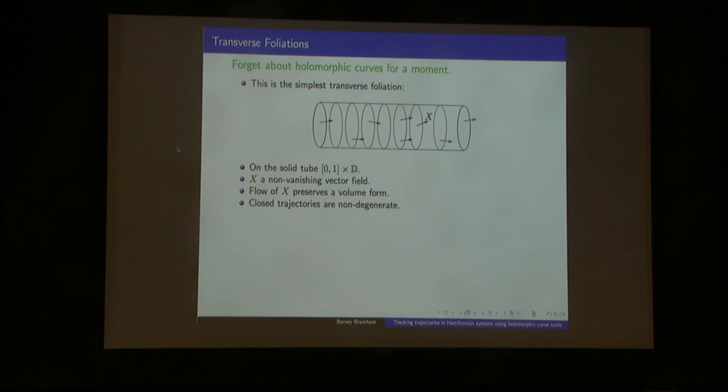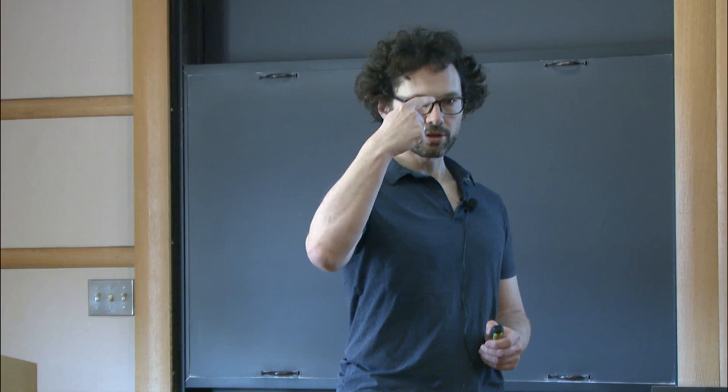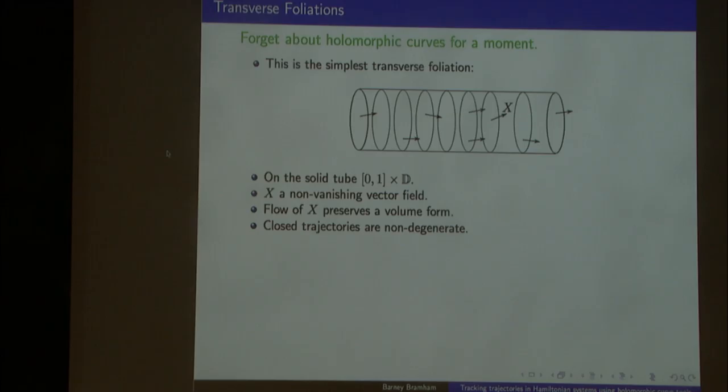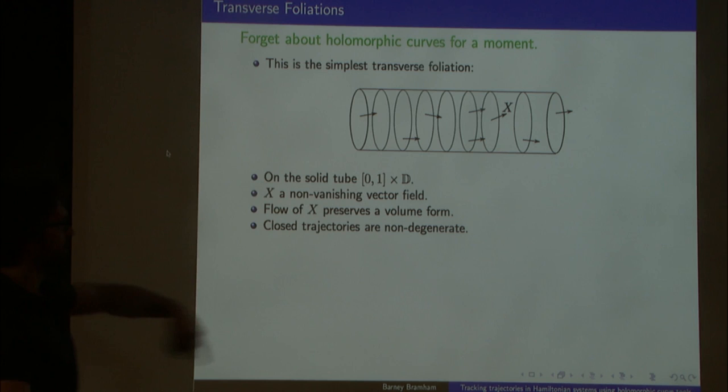I will assume most of the time, and certainly for the end result, that the closed periodic orbits of this vector field are non-degenerate. Since we're working in a conservative setting, this does not mean the eigenvalues of the linearized return map are not on the unit circle — they may be, because there will be symplectic matrices. But it means they're not one. So non-degenerate periodic orbits means one is not an eigenvalue of the linearized return map. We could identify the right-hand side with the left-hand side, making this look like a mapping torus.